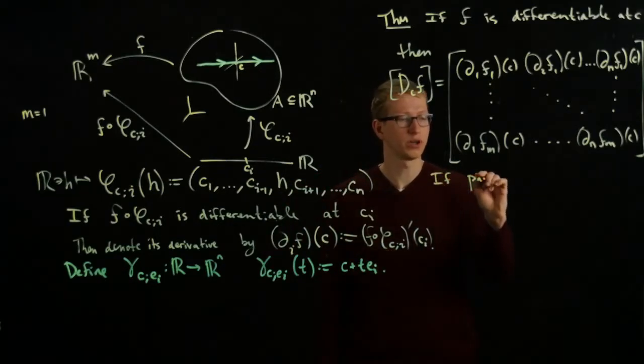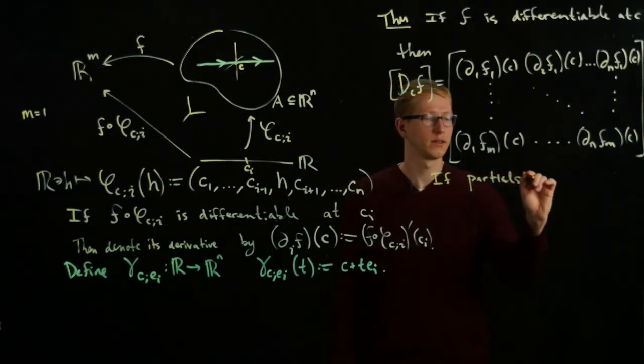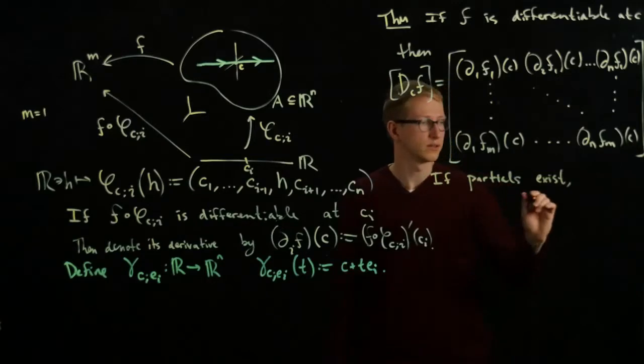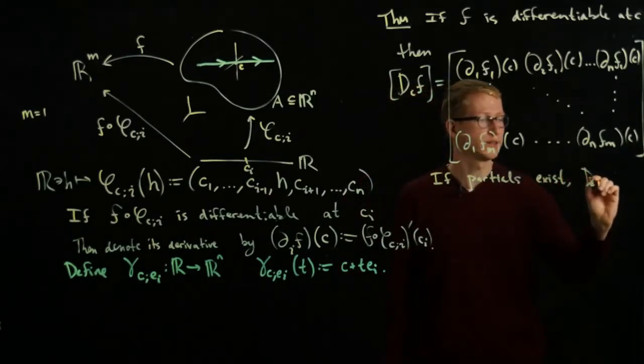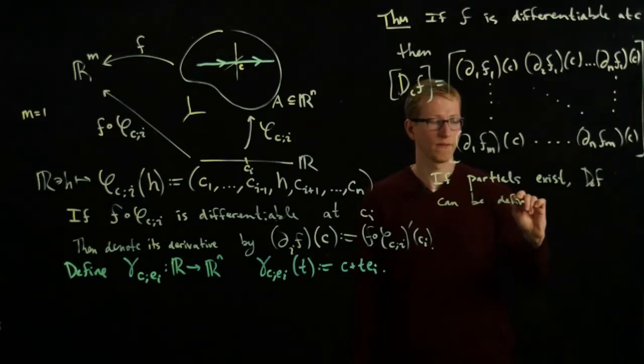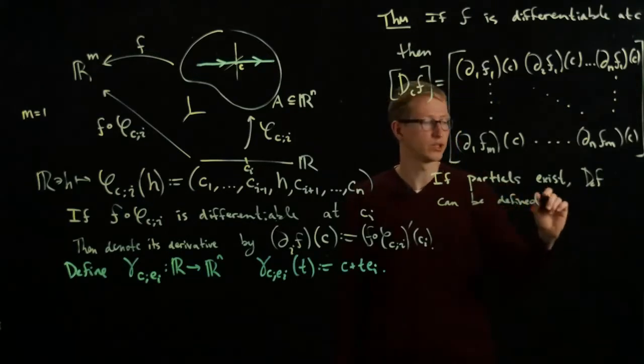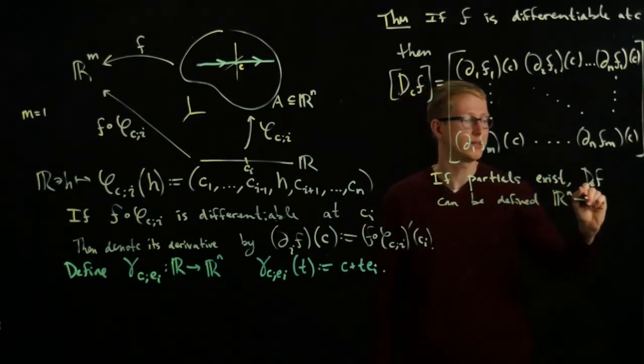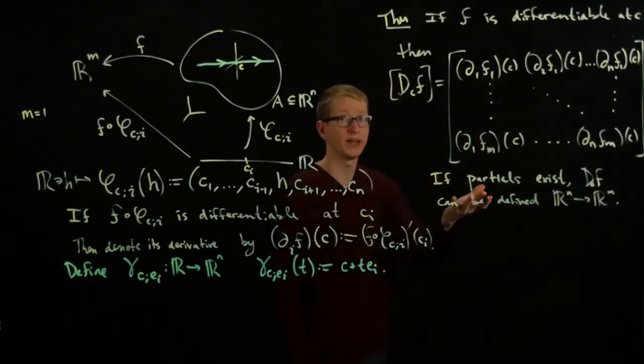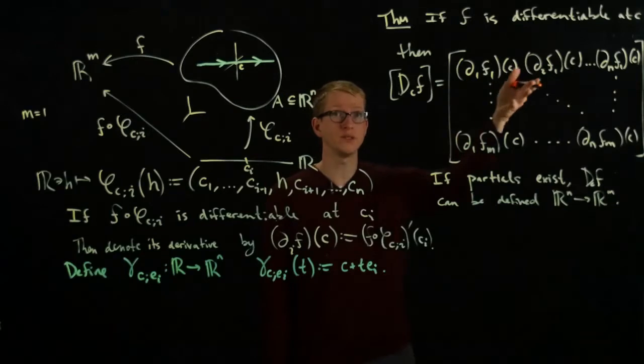Let's focus on what happens if all of these partial derivatives exist. I can construct this matrix—it makes sense as a linear operator. If the partials all exist, D_C F can be defined as a linear transformation from R^n to R^m.